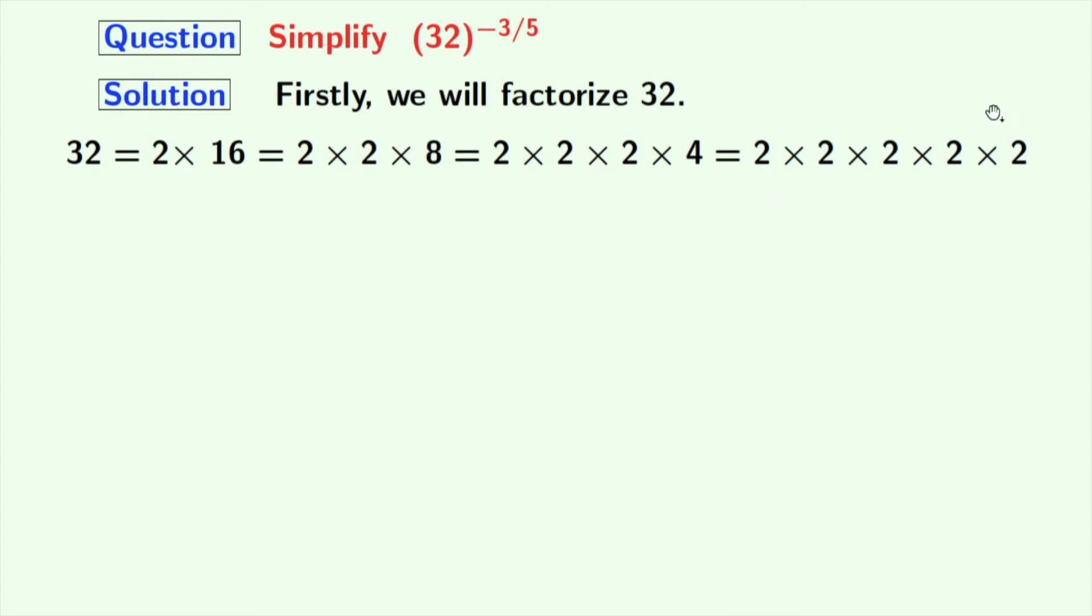As all these numbers here are prime numbers, so we will stop factorizing. Look, this is the product of 5 number of 2's. So we can write 32 as 2 power 5. Now our given quantity is 32 whole power minus 3 by 5.